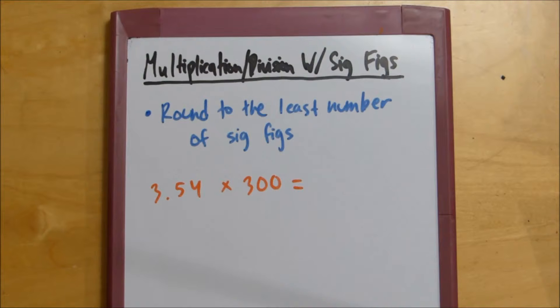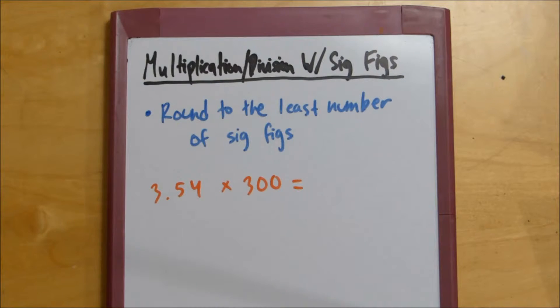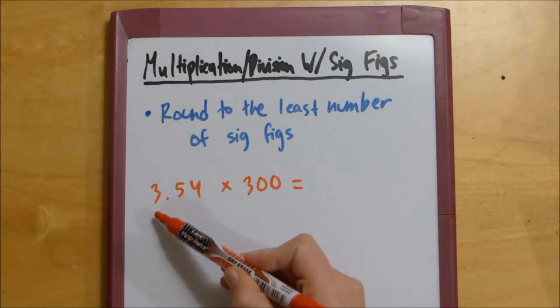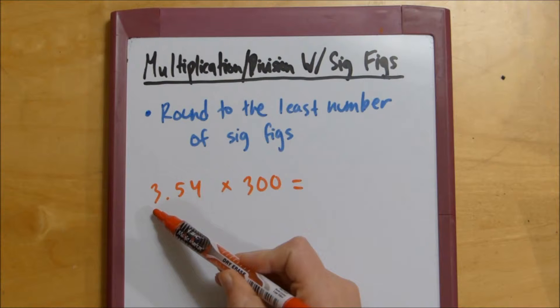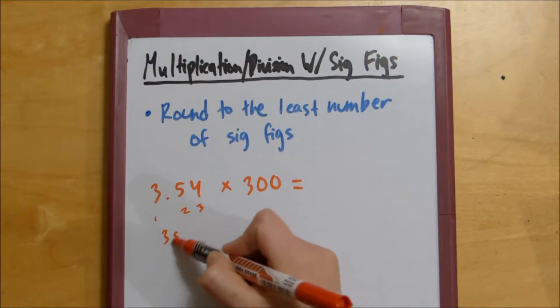is you want to figure out which number has the least number of sig figs. So you can use the Pacific Ocean, Atlantic Ocean strategy that I described in this video right here. We go to the leftmost non-zero number, so that would be 3, and then we count off 1, 2, 3. So this has 3 sig figs.